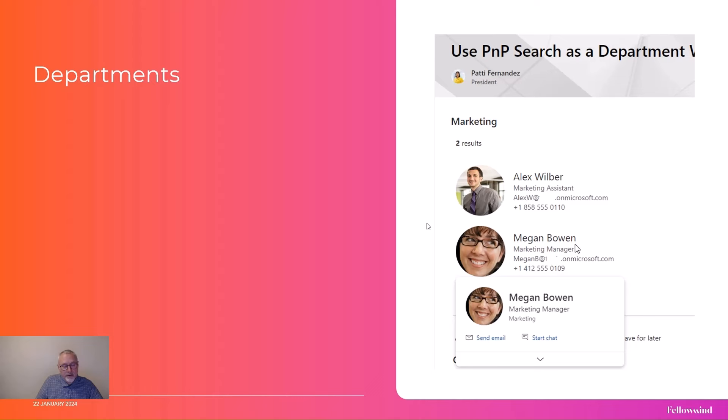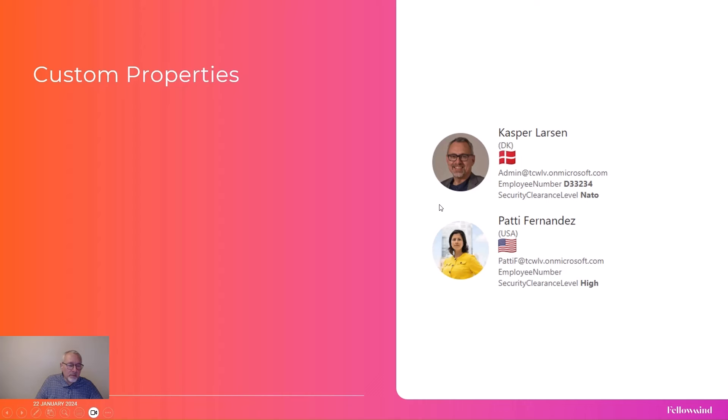Another example could be if we have additional custom properties we would like to show, like the nationality of people, perhaps an employee number, or in this case a security clearance level — whatever kind of specific properties you would like to surface on the user's profile card. That kind of information is not yet available in the out-of-the-box solution, so that's one of the reasons why we use PnP Modern Search.